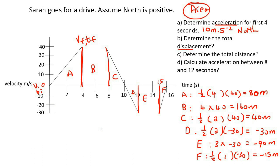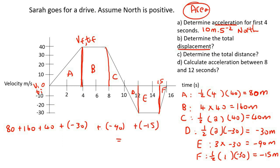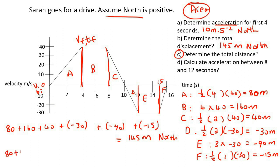To work out displacement, you add all of these together: 80 plus 160 plus 40, then plus negative 30, plus negative 90, plus negative 15, and you get 145 meters. Because we're getting a positive answer, the displacement is 145 meters north — remember, displacement is a vector. For distance, you just add all the absolute values together, ignoring the negatives, and that gives 415 meters.